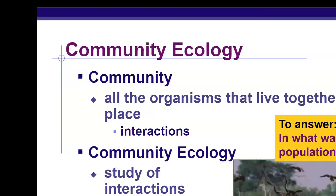We were talking about individual populations in the last chapter and talked about different distributions. Today we're talking about the community, and the community refers to all of the different species living within that ecosystem. Here's a good picture of an ecosystem along with its community. The community would include all of the living species — the trees, the birds, the grasses, the antelope — all of the organisms that live together, including their interactions.